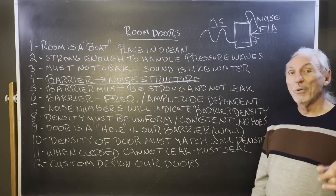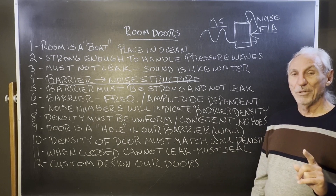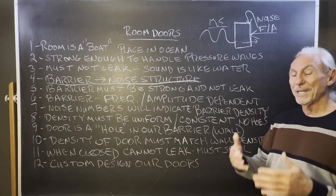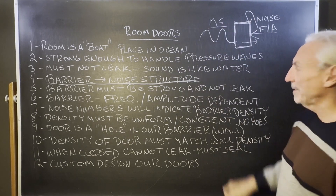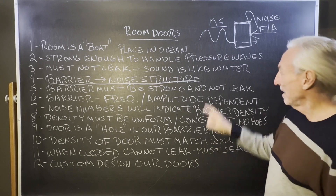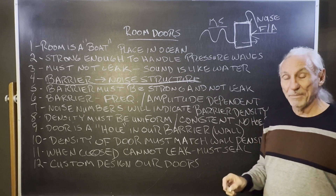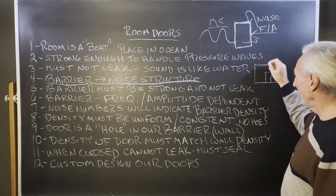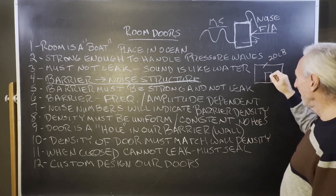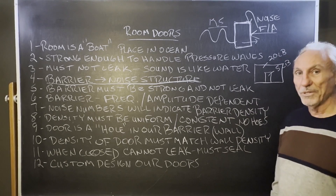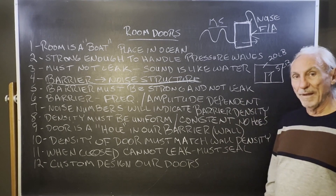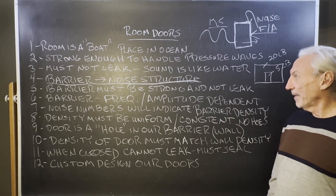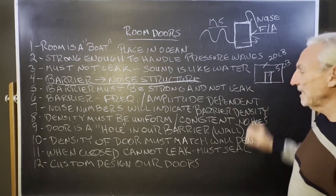In rooms that have doors, the door is the weak link. If we didn't have a door, you'd have a big hole where the door would be. But when the door closes, it has to act in the same manner as the barrier — it has to have the same density and it has to seal so it doesn't leak. If your wall has a density of 20 pounds per square foot and the door has five pounds per square foot, the noise is going to go through the weakest link. So the density and the seal of the door are critical.